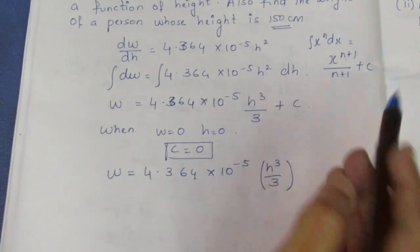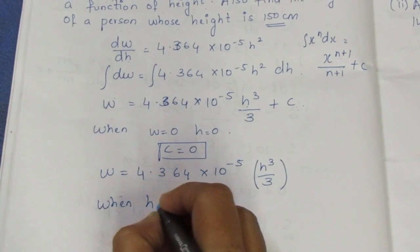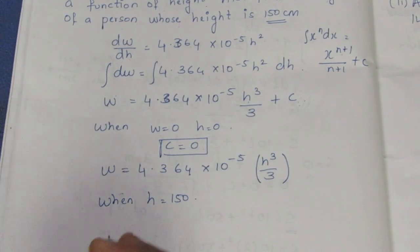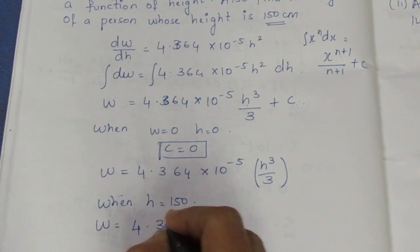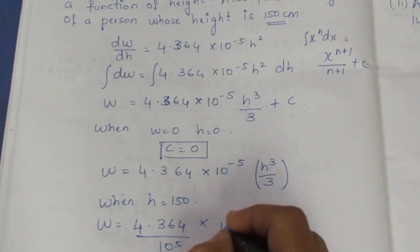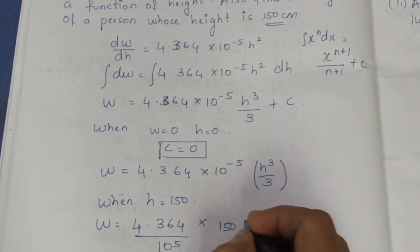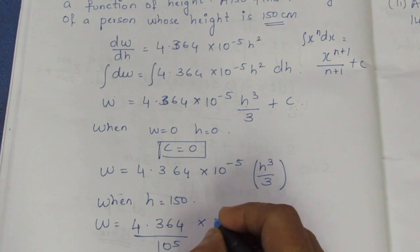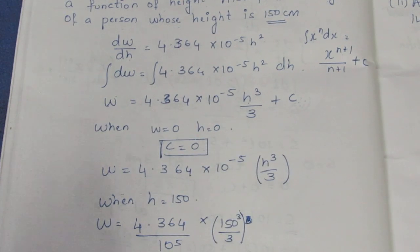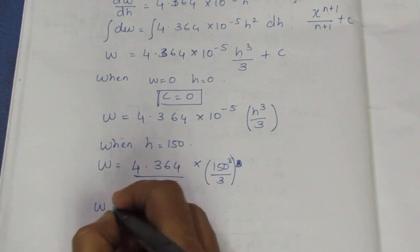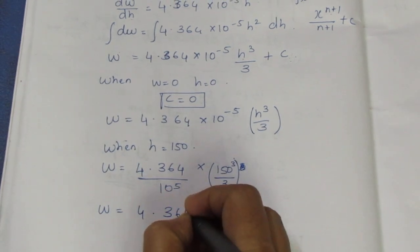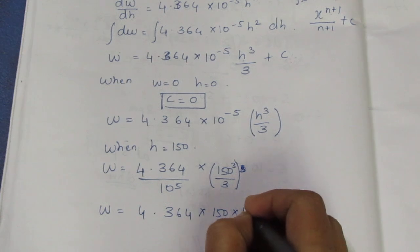Now, when H = 150 cm, we substitute into the general equation: W = 4.364 × 10⁻⁵ × 150³ / 3. So we need to compute 150 cubed divided by 3, which is 150 × 150 × 150 divided by 3.